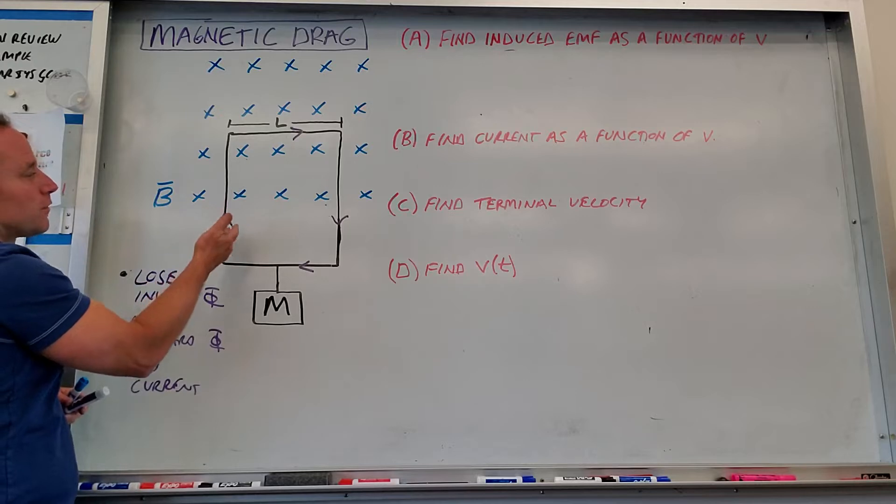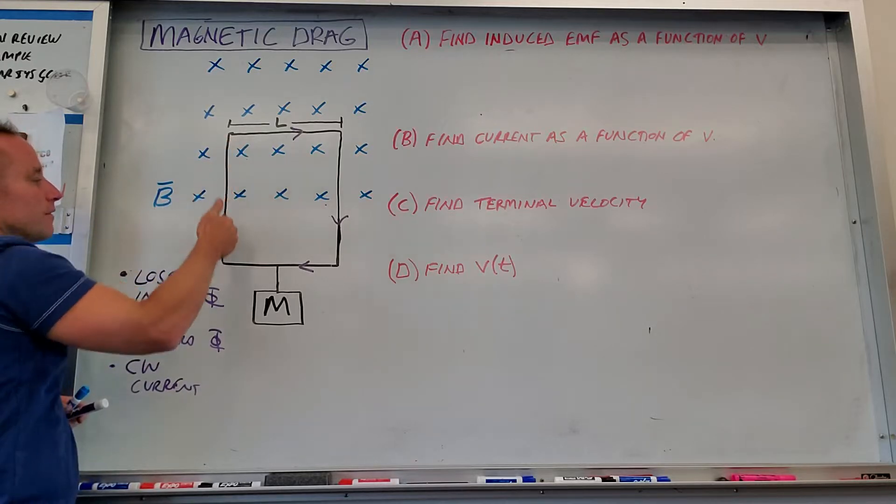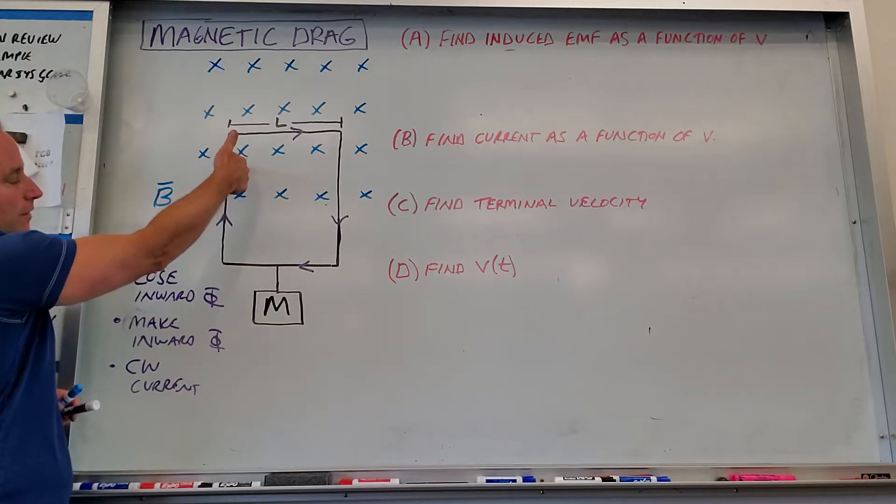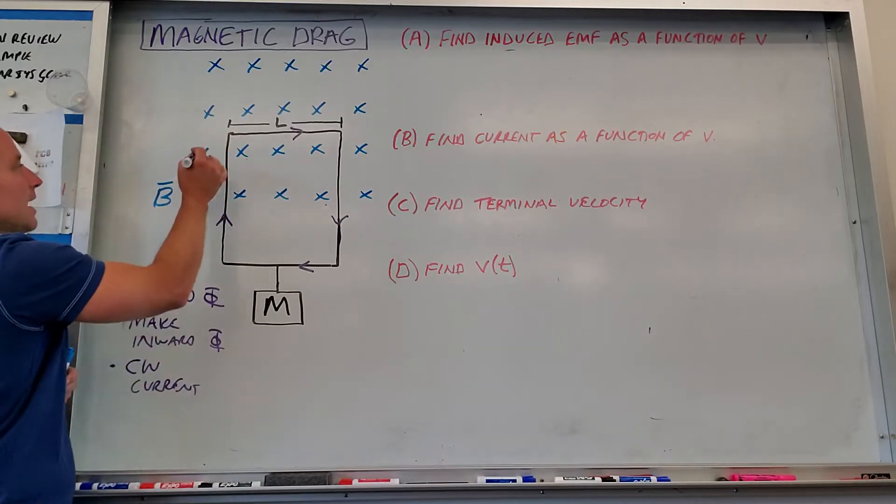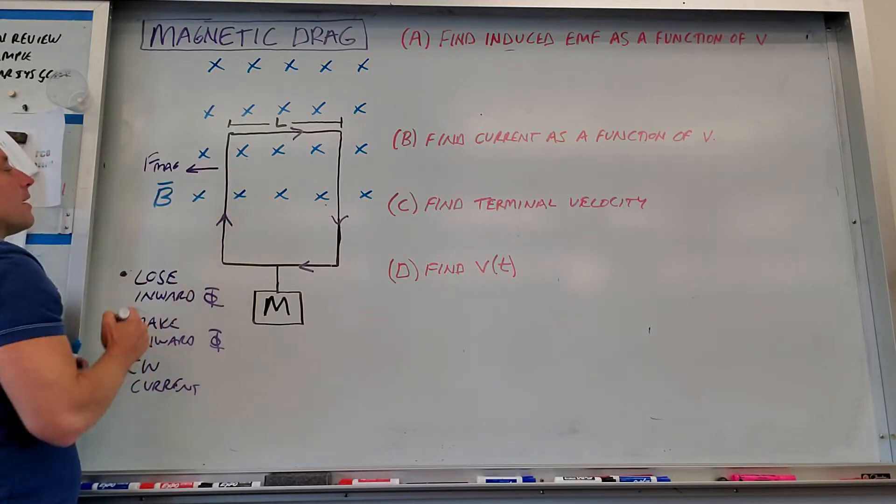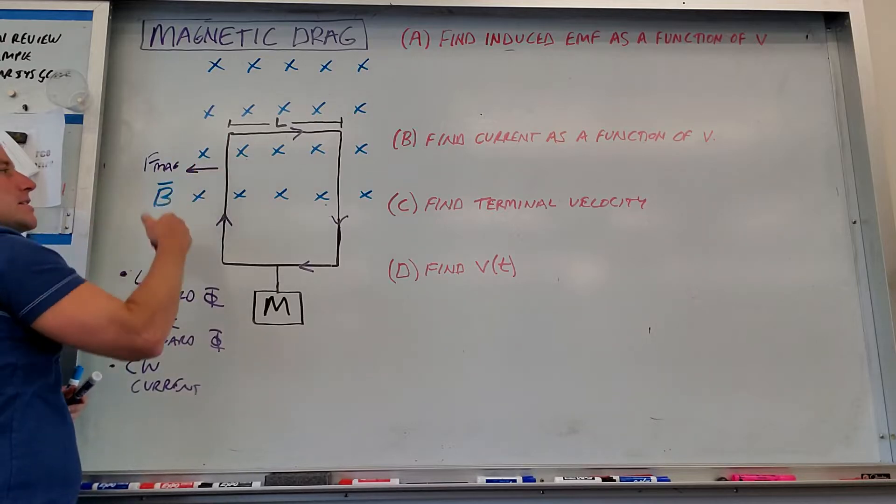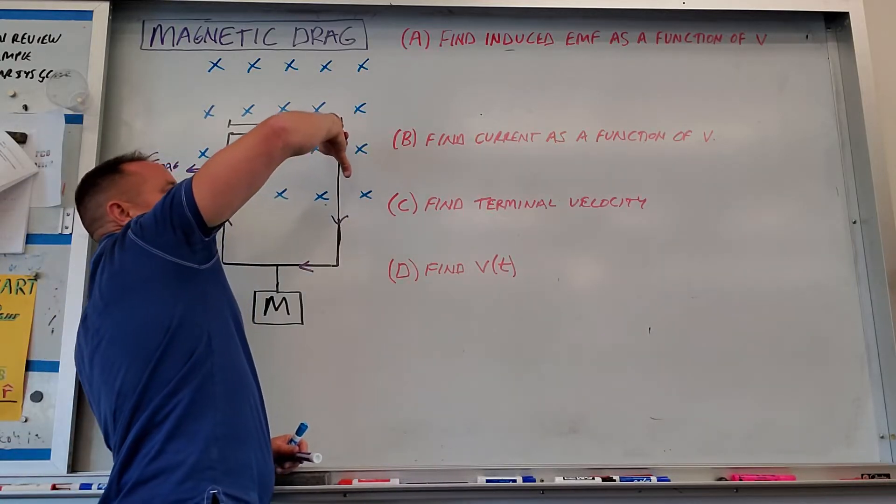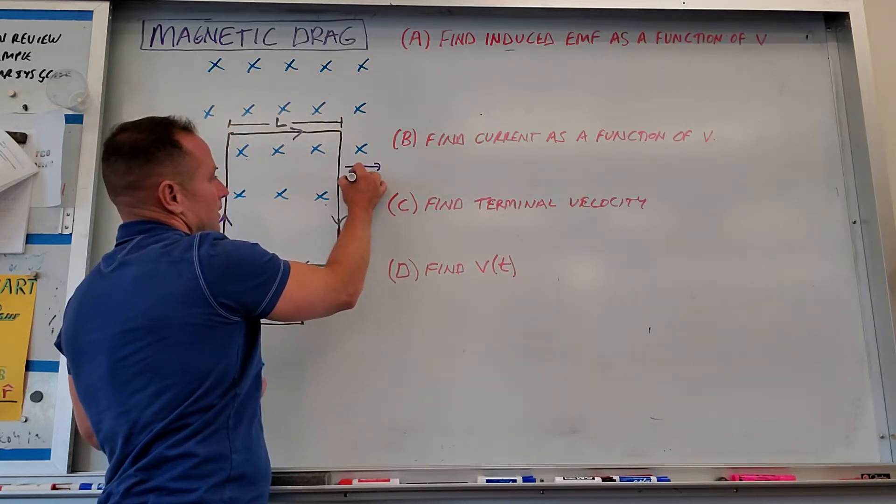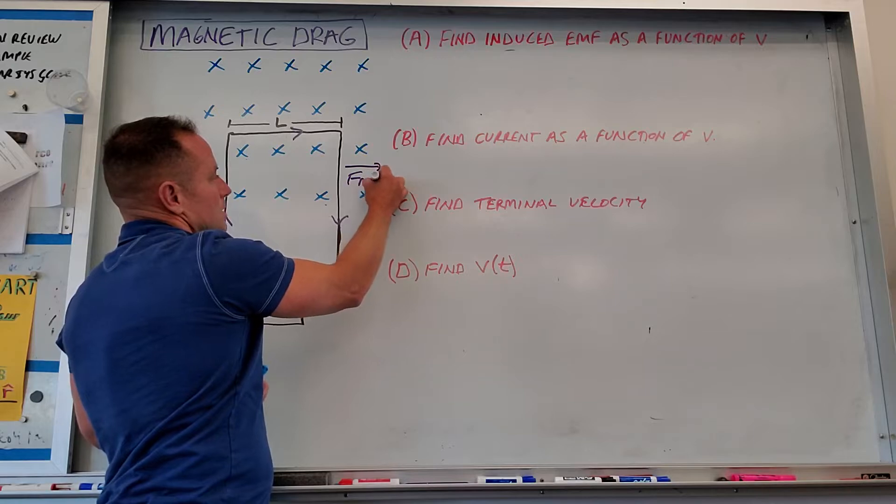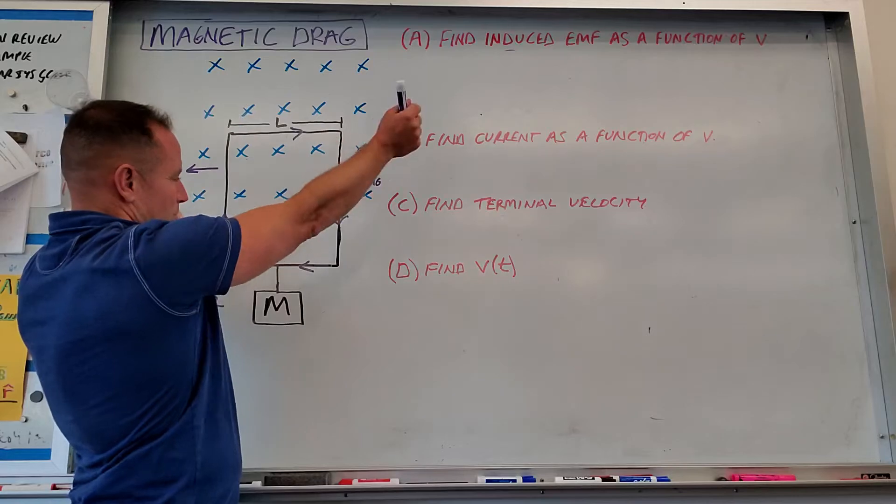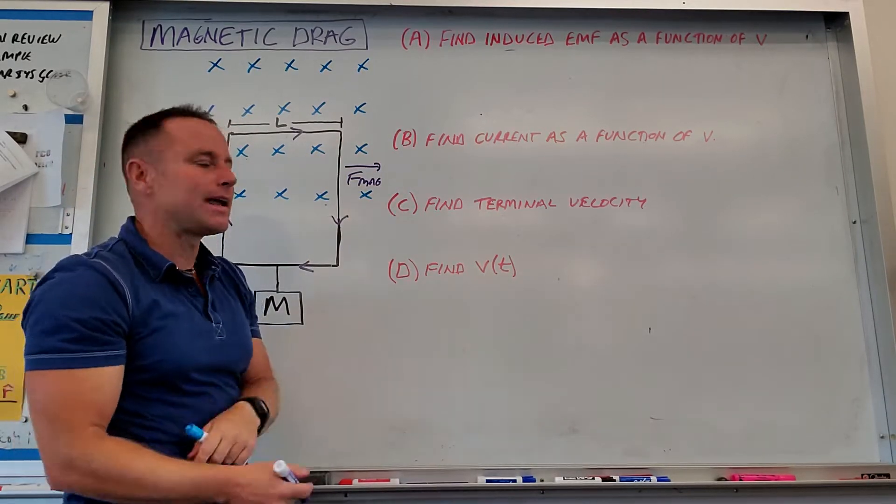Let's see what direction these forces would be. This segment of the wire that's still in the field, you would have current going this way through a field that points in. So that's going to generate a magnetic force to the left, over here. Here would be F magnetic. On the right-hand side, though, you have current going down this way through a field that points in. That's going to make a magnetic force off to the right. And so those guys are going to be equal and opposite. They'll cancel each other out. If this were flexible wire, it might try to blow it out to the side. But we'll say it's rigid, so it can't do that.